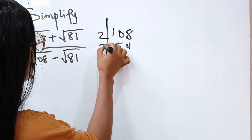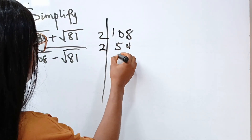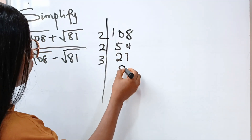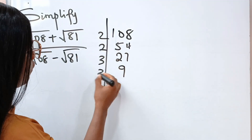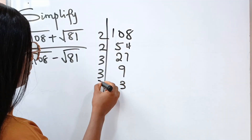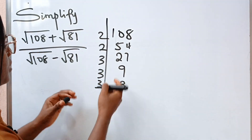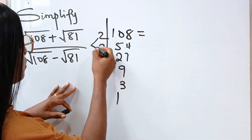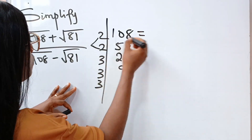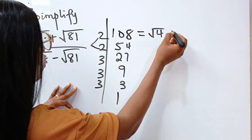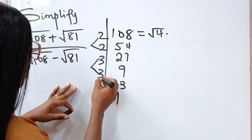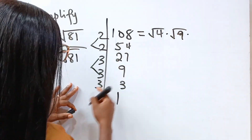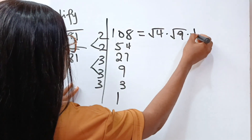We divide by 2 to give us 54. Divide by 2 to give us 27. Divide by 3 to give us 9. Divide by 3 to give us 3. Divide by 3 to give us 1. So notice that 108 can be expressed as 2 times 2 is 4 — that is root 4 — multiplied by 3 times 3 is 9, root 9, multiplied by root 3.